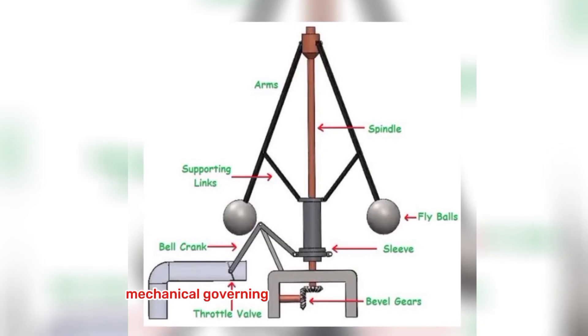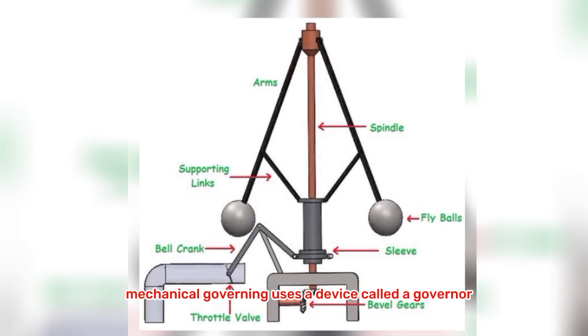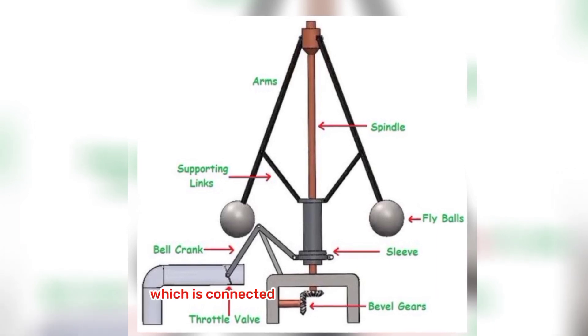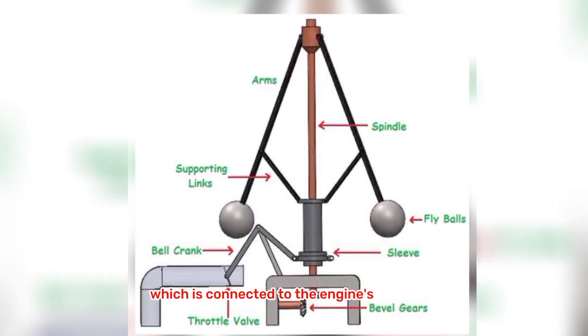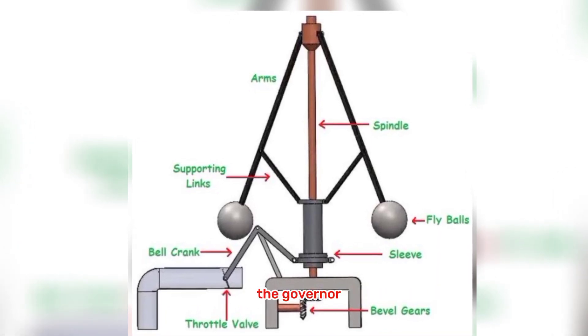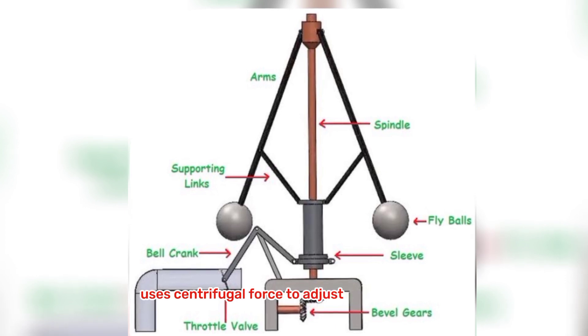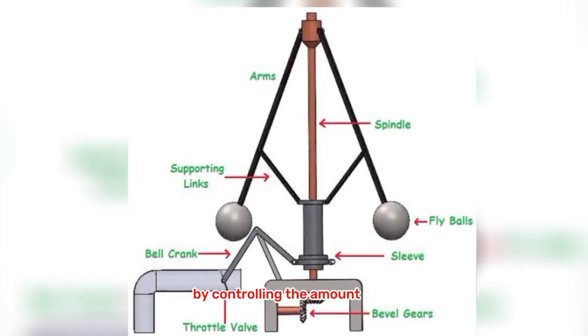Mechanical governing uses a device called a governor, which is connected to the engine's crankshaft. The governor uses centrifugal force to adjust the engine speed by controlling the amount of fuel that is allowed into the engine.